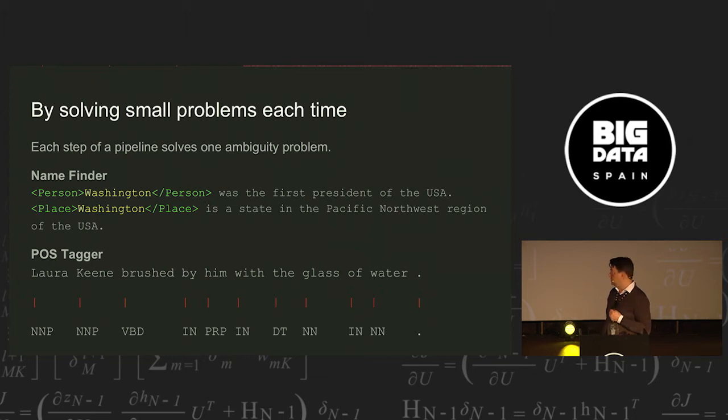Another step we usually do is part of speech tagging. And those familiar with linguistics will probably know a little more about it. So, it is like taking each word or each token and trying to determine which word class does this word belong to. So, lorikeet is a proper noun, and then NP is from the Penn Treebank corpus. And then we have like brushed is a verb, by is a preposition, him is a pronoun, and glass and water are nouns, which can be useful to know what kind of word it is.